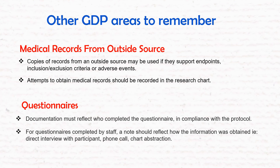For medical records from outside sources, lab reports must be printed and reviewed by the PI. Any higher or lower values must be marked as clinically significant (CS) or non-clinically significant (NCS) based on the PI's assessment. For questionnaires, documentation should reflect how information was observed, who conducted the interview, which study participant was present, and — for phone interviews — what was discussed and documented in the chart.